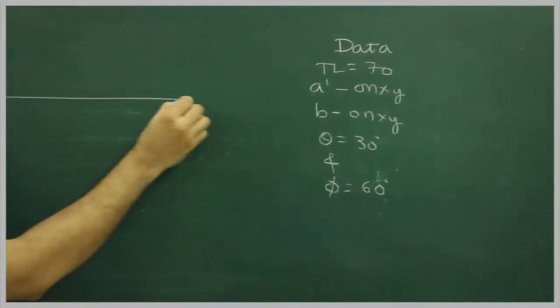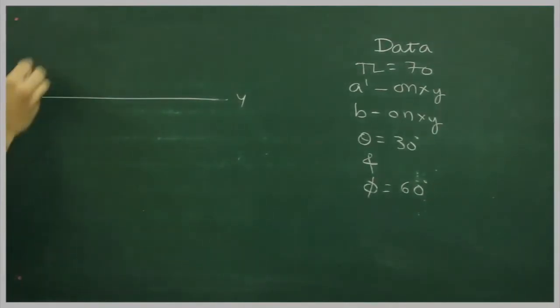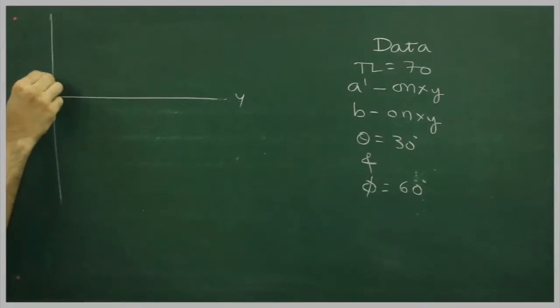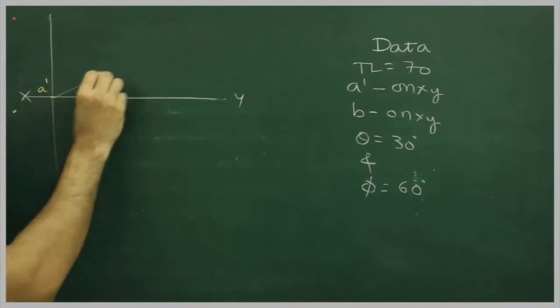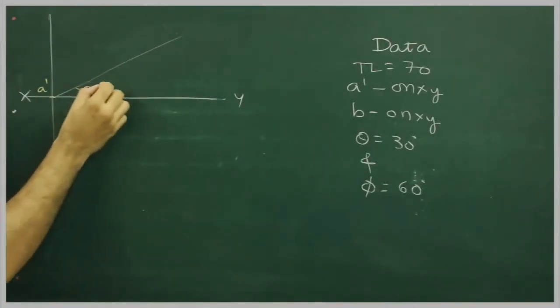Now we will draw the xy line. After that, we will mark point a' over here. They have given angle theta, so we can mark theta at 30 degrees.